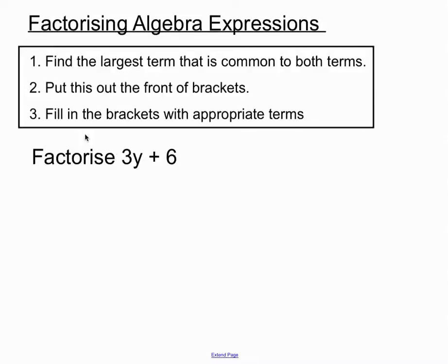We're asked to factorise 3y plus 6. We've got to find the largest term, whether it's a number or a letter, that can divide into both of the terms in the question. What can go into 3y and 6? 3 can go into both of those, so we put that 3 out the front of the brackets.